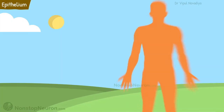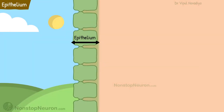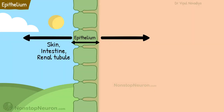As we have seen in the video on milieu interior, the epithelium is a lining between the interior of the body and the outside world. For example, the outer layer of the skin, the lumen of the intestine, renal tubules, etc. — all are lined with epithelium.